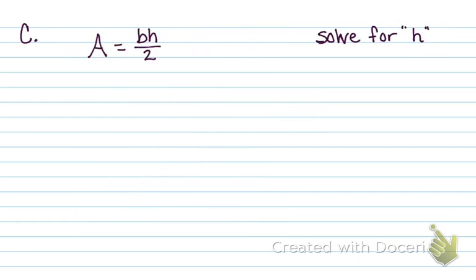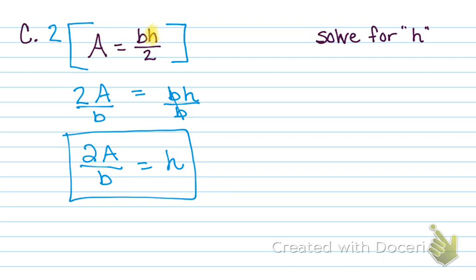This one you're going to solve for H — pause the video and see what you get. In this one we had a fraction, so I decided to clear the fraction. I picked the denominator 2 and multiplied each piece. 2 times A got me 2A, and then 2 can go into 2 once, so 1 times BH is BH. Then I want to get B away from H, so I divide by B on both sides. The B's cancel out, and I'm left with just H. So my answer is 2A divided by B equals H.